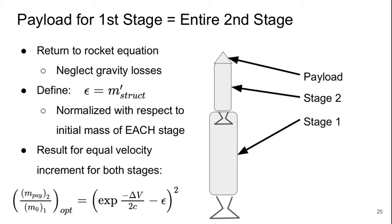And when we do that, when we have our optimal result where we have equal velocity increments delta V for both stages, we can get what the payload mass for the second stage, which is the actual rocket's payload, over the initial mass for stage 1, for a given delta V, epsilon, and C. So this essentially tells us what size the rocket needs to be to carry a certain payload.